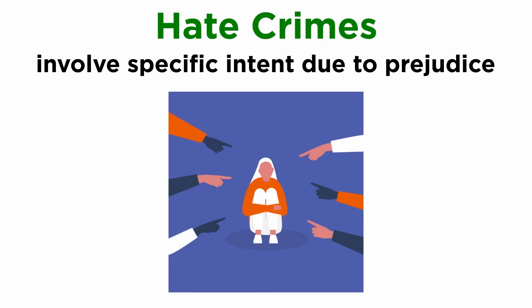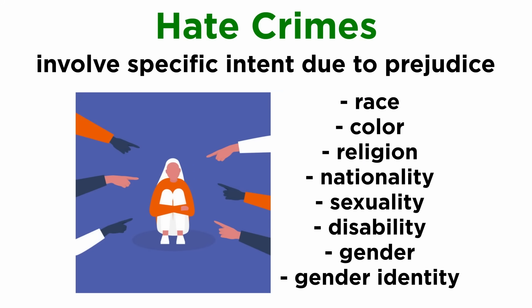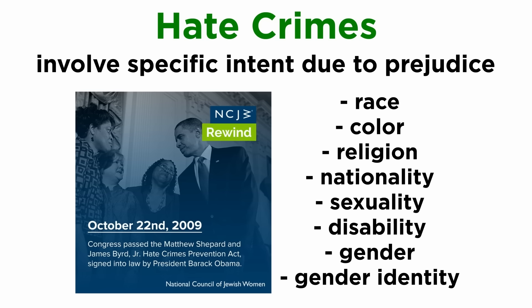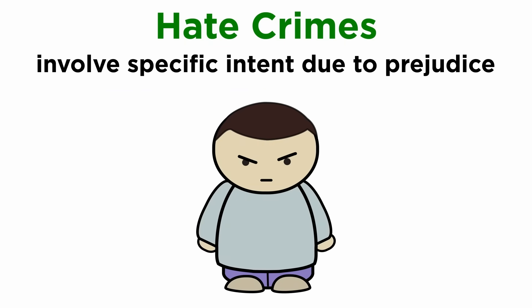Hate crimes are those crimes that involve crimes against persons as well as property, but they involve a specific intent that is a result of the prejudices of the perpetrator against the victim. Before 2009, FBI investigations of hate crimes were limited to bias against the victims' race, color, religion, or national origin. But after the passing of the Hate Crimes Prevention Act in 2009, these crimes have been extended to the grounds of actual or perceived sexual orientation, disability, gender, and gender identity. However, one thing to mention here is that hate itself is not a crime, being mindful of personal liberties.